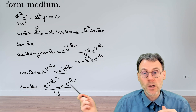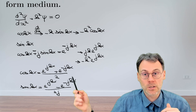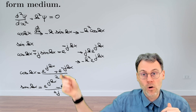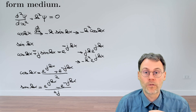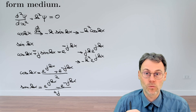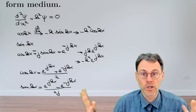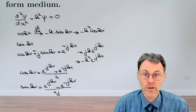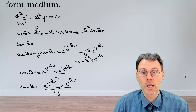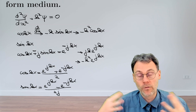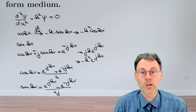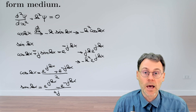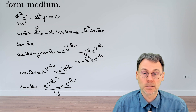So here you have the most common types of solutions, and any linear combination of two solutions will be the most general form of a solution. You also have the physical interpretation: propagating plane waves for the complex exponentials, and standing waves for the sines and cosines.